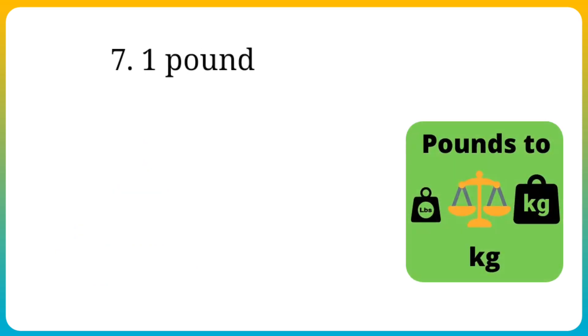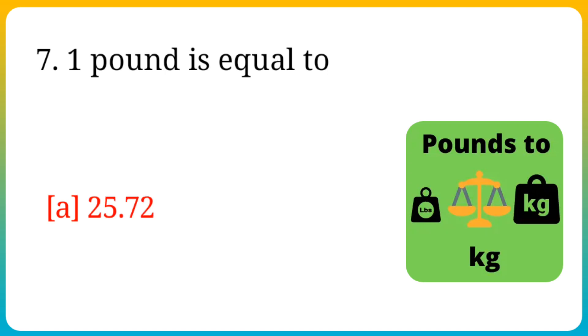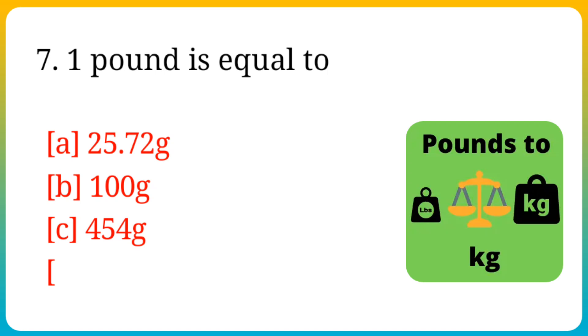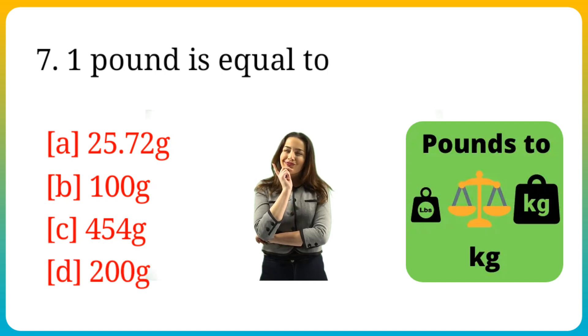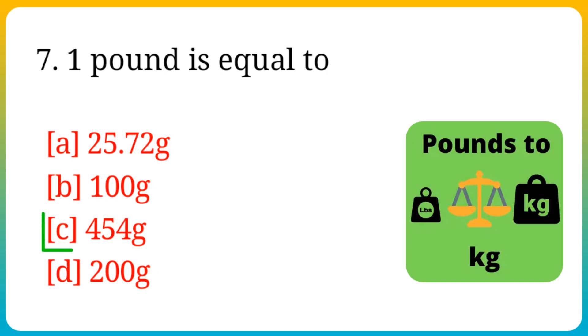Question number 7. 1 pound is equal to? Options are: A. 25.72 grams, B. 100 gram, C. 454 gram, D. 200 gram. Answer is option C. 454 gram.